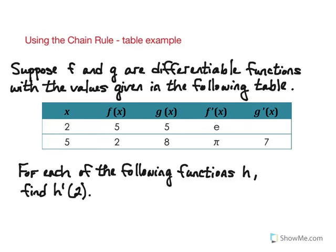Let's take a look at an example of how we can use the chain rule and a table of values that were given to find requested derivatives. Looking at this table, we have two different x values — 2 and 5 — and we're dealing with two functions, f and g. We have the function values for those two functions as well as the derivatives. One value that didn't show up is a square root of 2, just so you know.